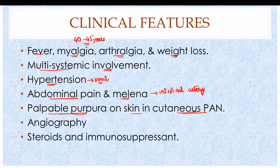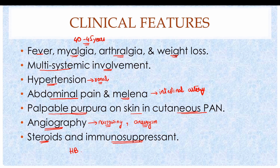Diagnosis is established on the basis of clinical signs, raised erythrocyte sedimentation rate, and angiography showing narrowing of blood vessels and possible aneurysms. Treatment involves oral steroids such as prednisolone and immunosuppressants including methotrexate and cyclophosphamide. Patients are also evaluated for hepatitis B virus infection, since 30% of Polyarteritis nodosa cases are associated with chronic hepatitis B.